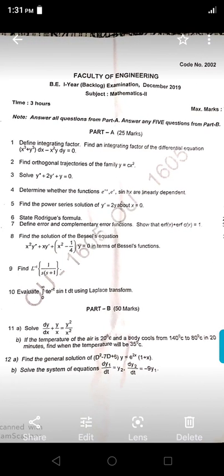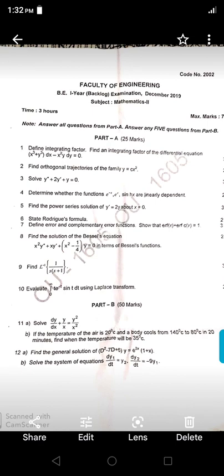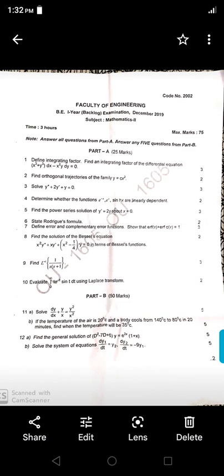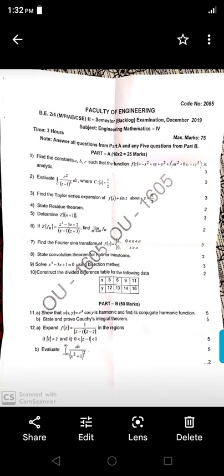This is one paper, December 2019 Engineering Mathematics 2 paper. For your practice and reference, you can go through these papers. This is Mathematics 2 paper, then we have Mathematics 4 for old students. For current batches it is not there, for old students it is there. This is the backside of the papers.